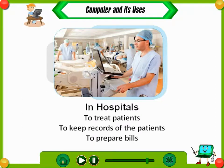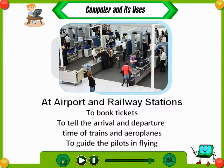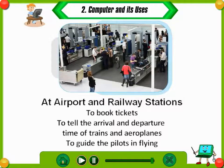In bank, computers are used to deposit money, to withdraw money, and to maintain accounts. At airports and railway stations, they are used to book tickets, to tell the arrival and departure time of trains and aeroplanes, and to guide the pilots in flying.